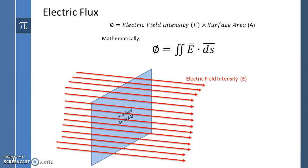Now let us understand what you mean by electric flux. Electric flux is the number of lines passing through a given surface area, denoted by phi.